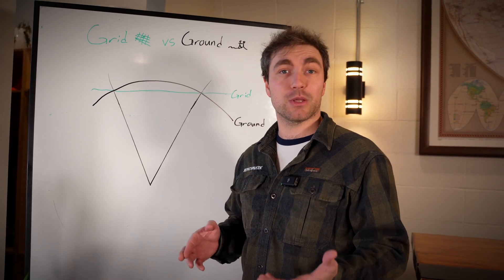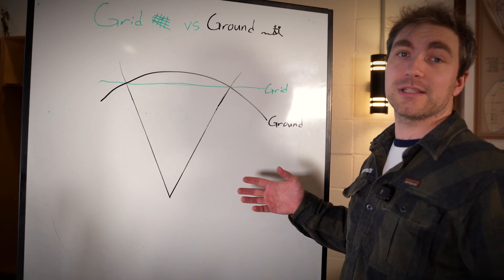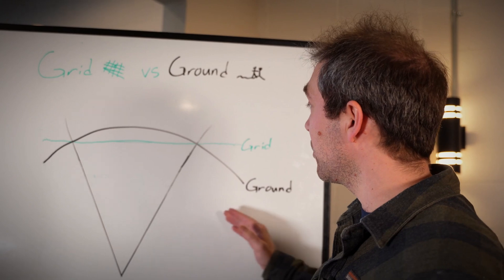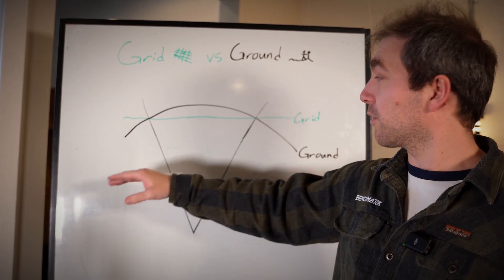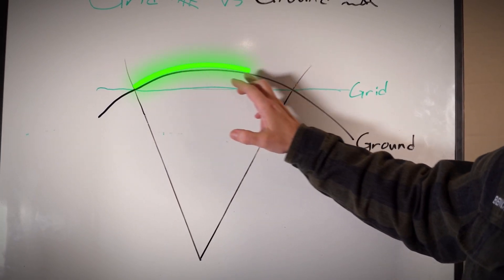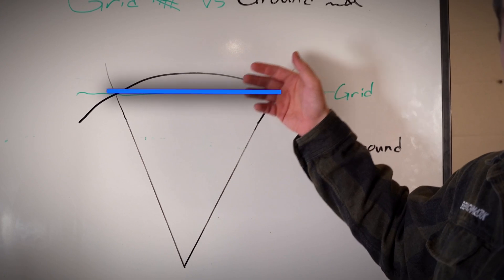You can see why the two distances will be different on this drawing. The grid, this green line, is just a flat mapping plane going through the surface of the earth. If I'm measuring the distance between these two points, to flatten this and fit all this ground onto the grid, I have to distort that quite a bit.